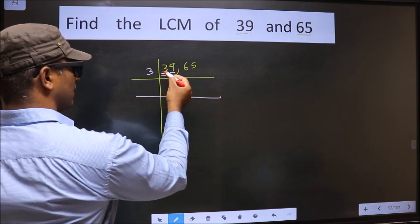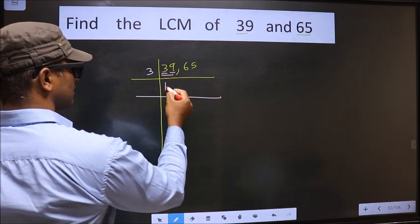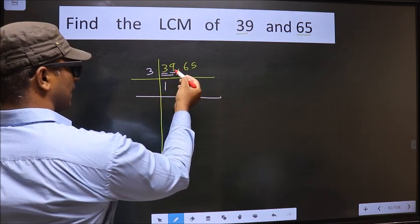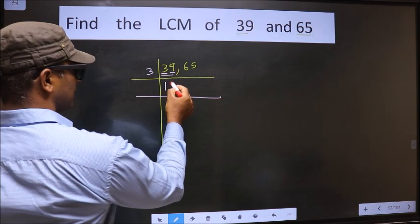The first number 3, when do we get 3 in 3 table? 3 ones is 3. The other number 9, when do we get 9 in 3 table? 3 threes is 9.